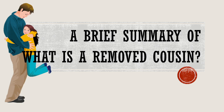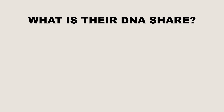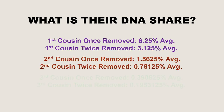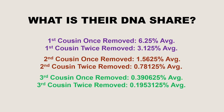The first thing we need to understand about removed cousins is what is their DNA share. For this I've broken it down into three sections: the first cousin section, the second cousin section, and the third cousin section. For all three sections I've covered once removed and twice removed cousins. I have not covered third or fourth times removed, nor fourth cousins or beyond — but let me know in the comments if that interests you. As you can see, all these DNA shares are averages, which I'll discuss later in the video.